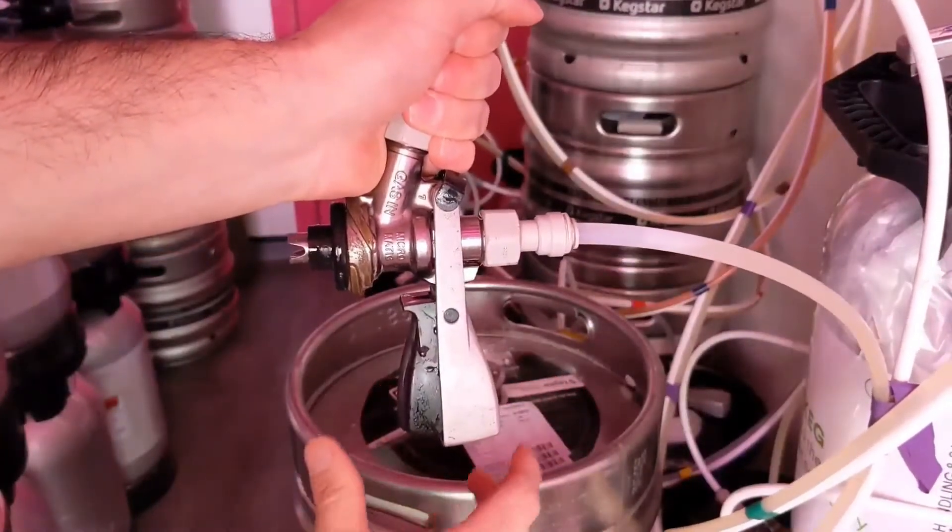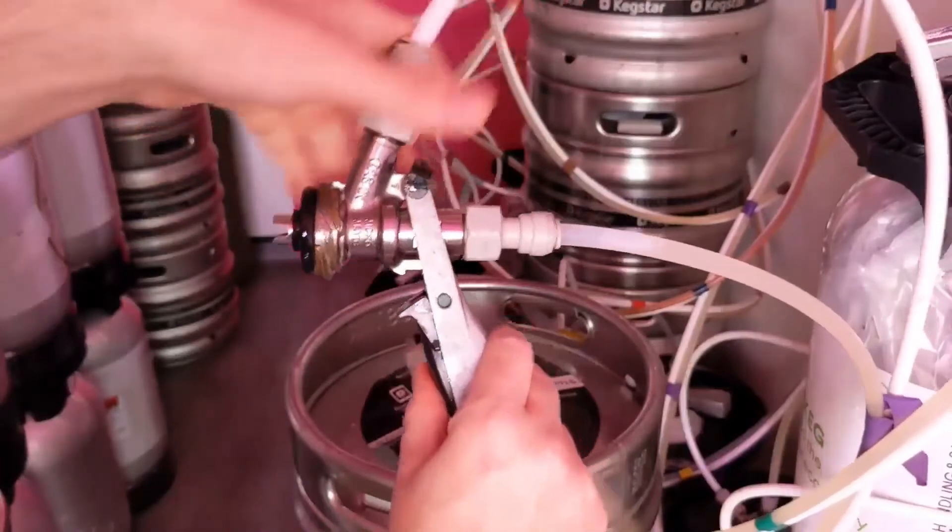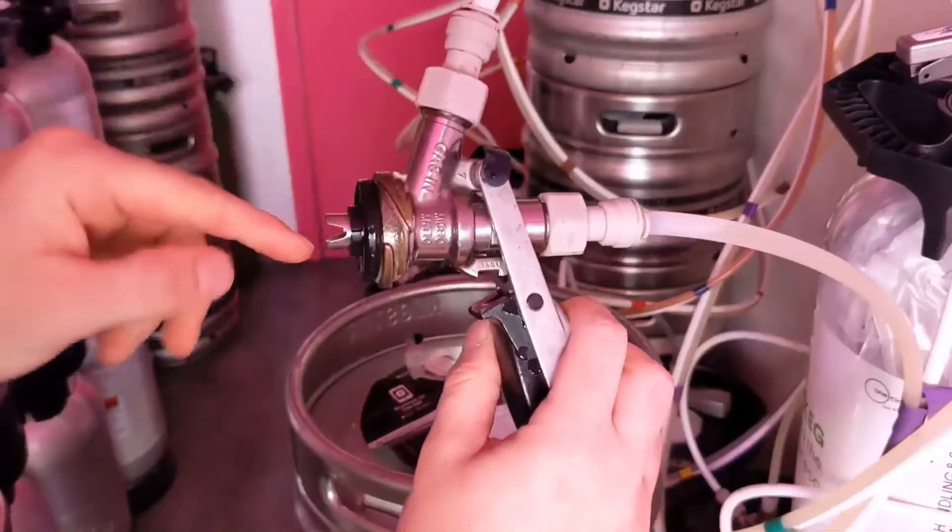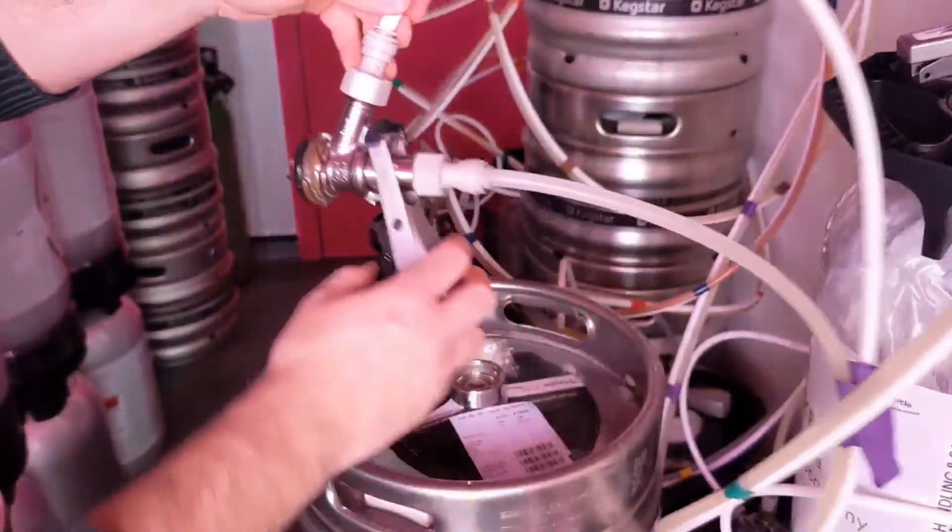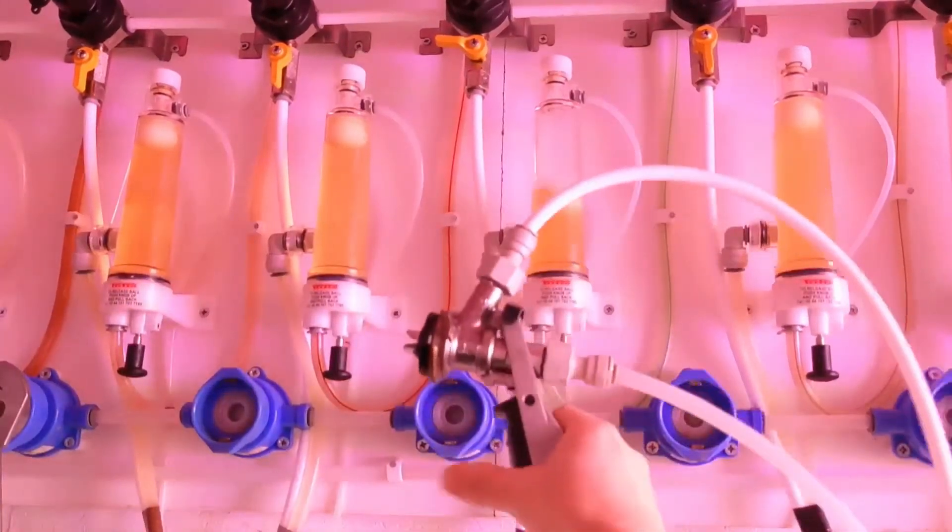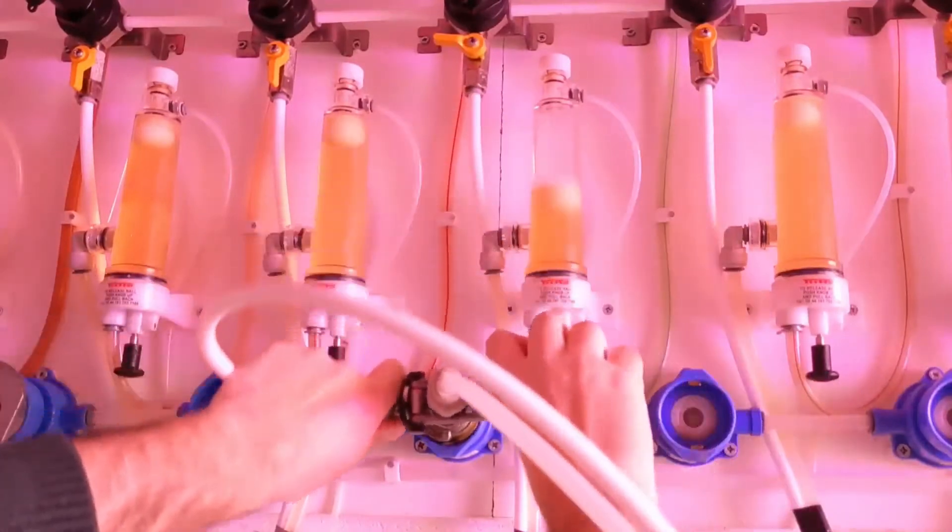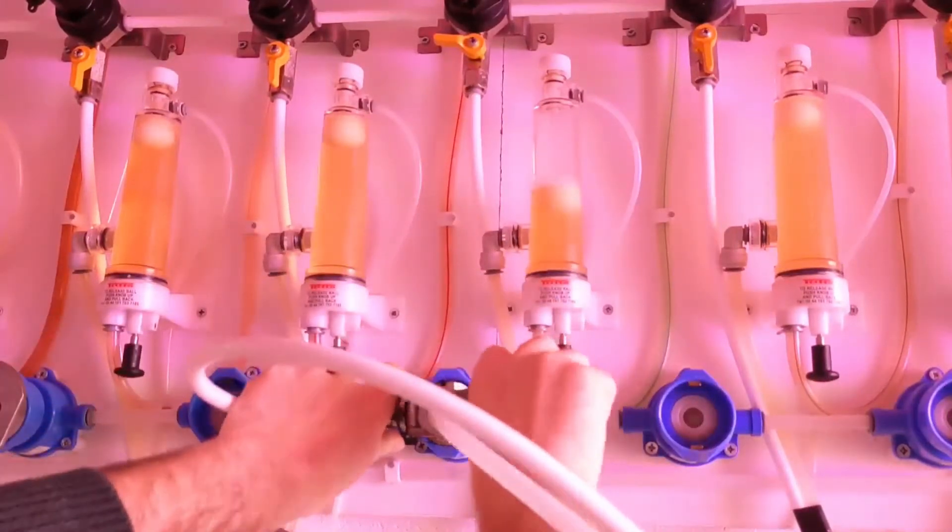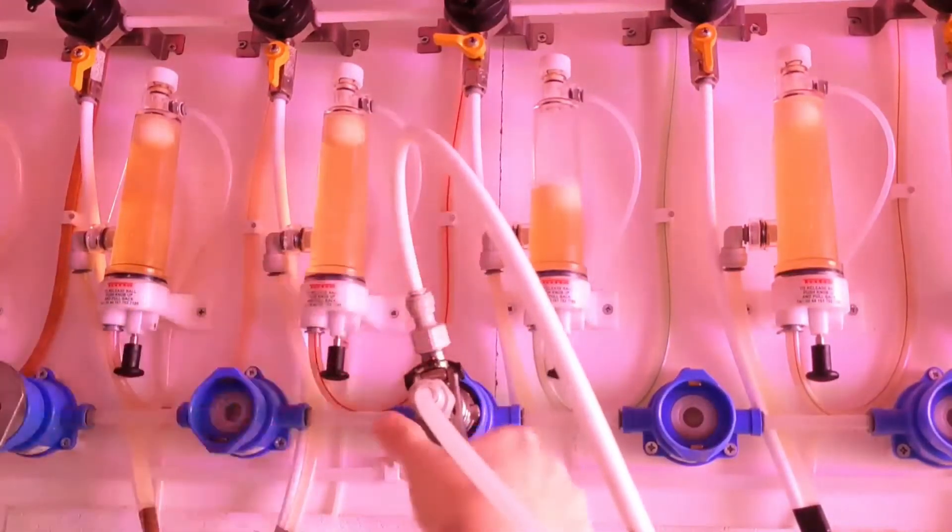You want to make sure this is in a closed position, which is up, and then connect it to the cleaning line. Once connected, we can come over to the cleaning line's gas supply and turn this on.